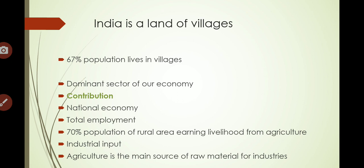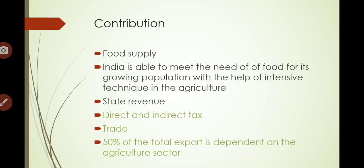Agriculture's contribution to food supply is also significant. Food production was 198 million tons and it has been increasing. It was 198 million tons but nowadays it is increasing to 225 million tons, and by 2020 it is expected to double, which means it will be sufficient for around 100 crore people.